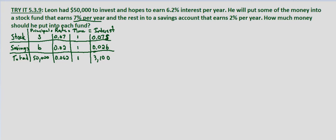Now, what's our system of equations? We know that the amount in stocks plus the amount in savings is going to equal $50,000 total, so S plus B equals $50,000. And we know the interest from stocks plus the interest from savings equals $3,100 per year: 0.07S plus 0.02B equals 3,100. And there's our system of equations.